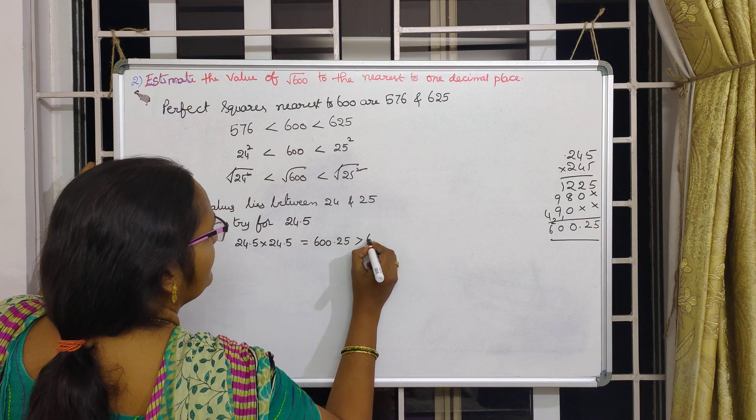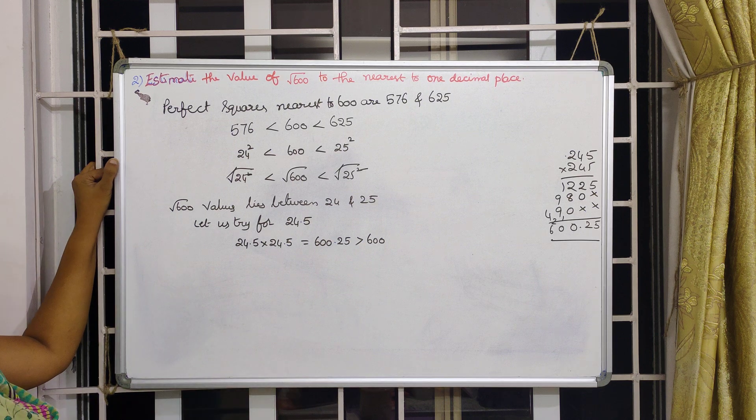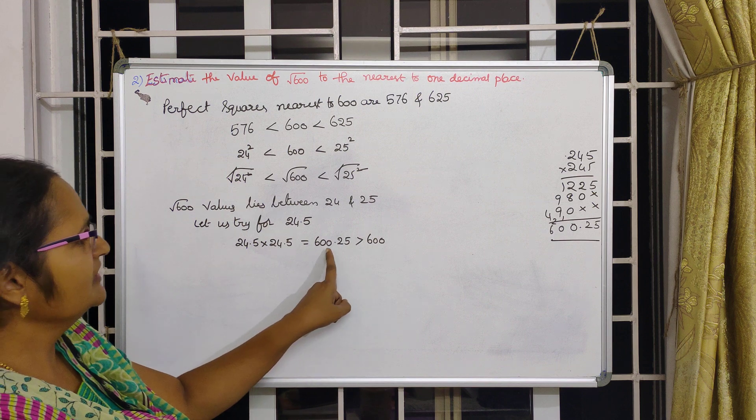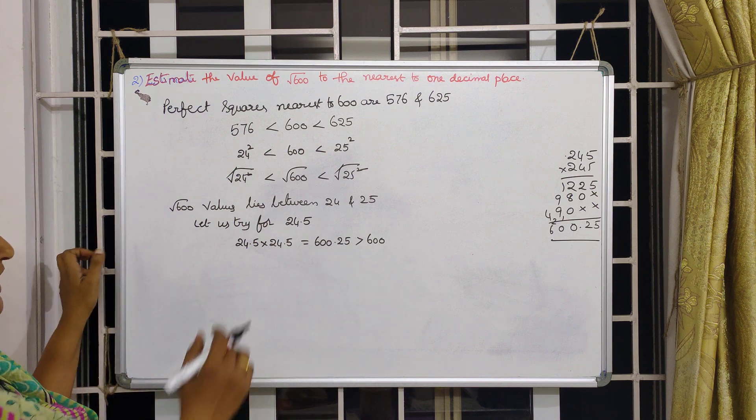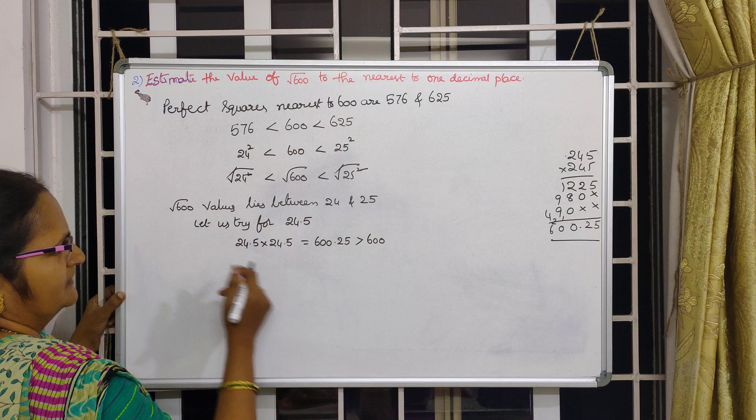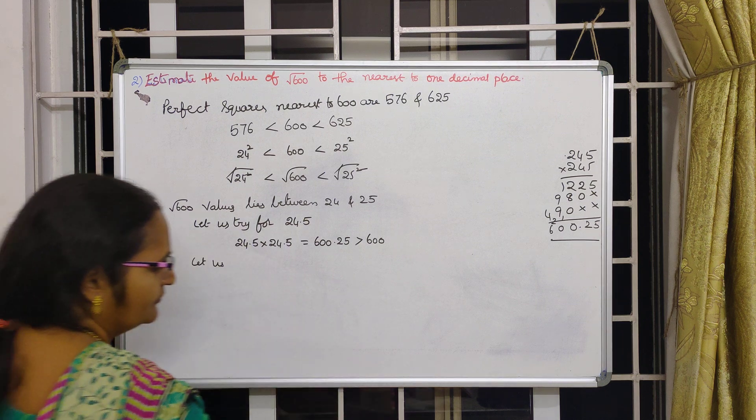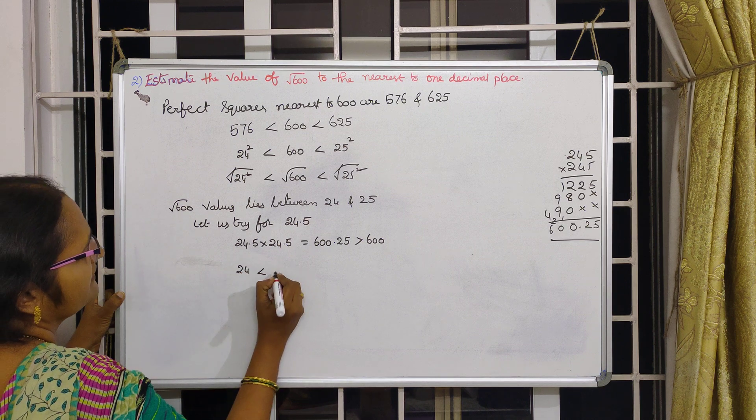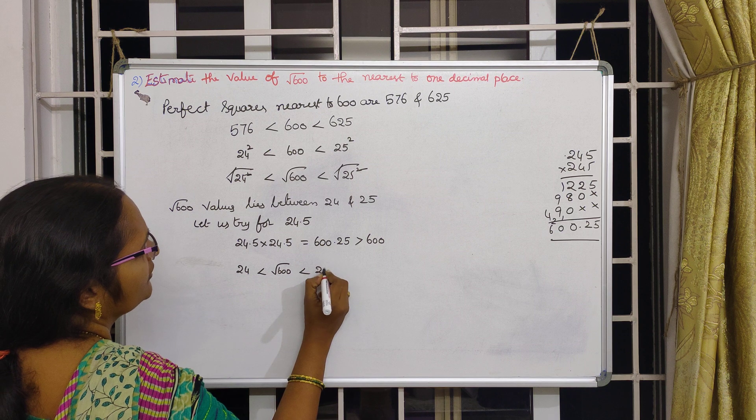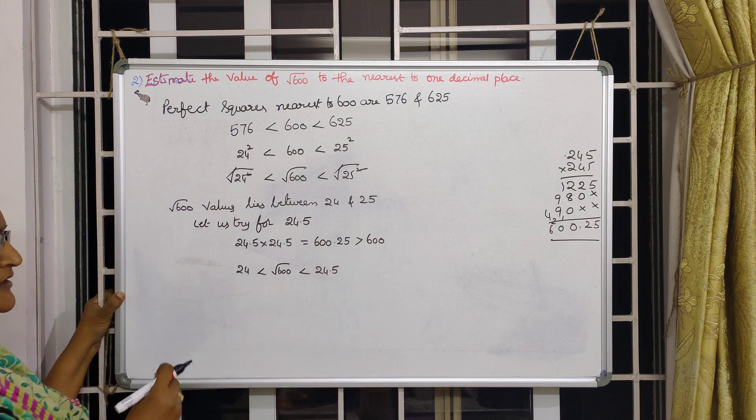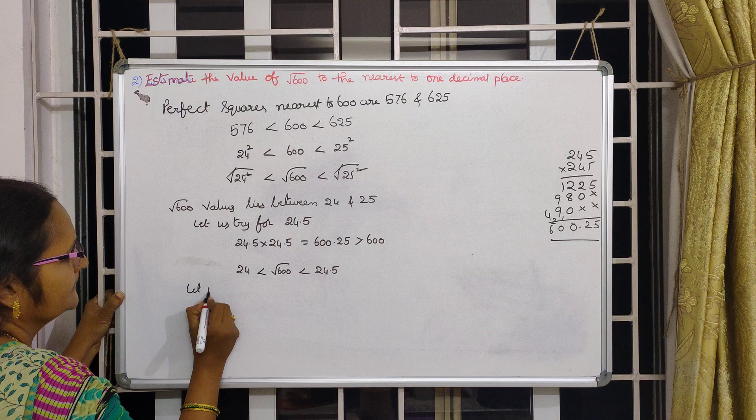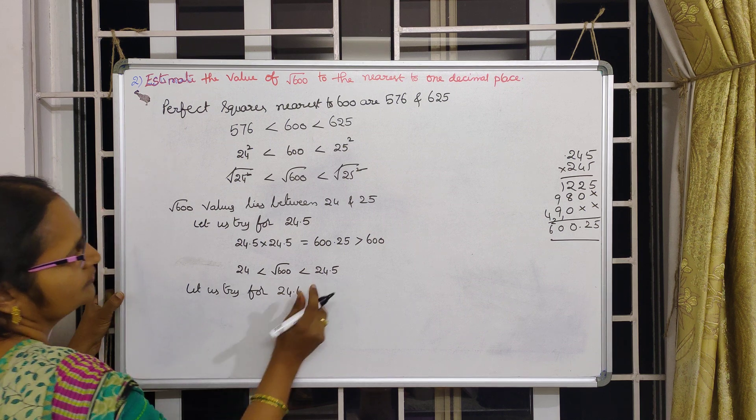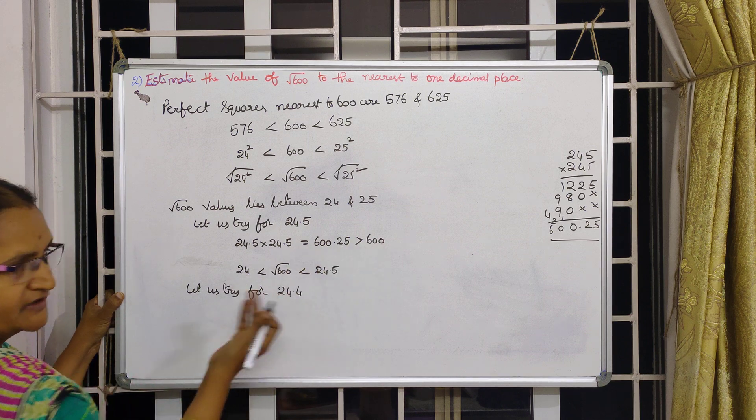600.25. This is little bit greater than 600. Now I will go for little lesser. Let us try for, that means from here what do we write? Look at here, 24 is less than root 600, this is less than 24.5. But now let us try for 24.4 I will go because little bit more is there.